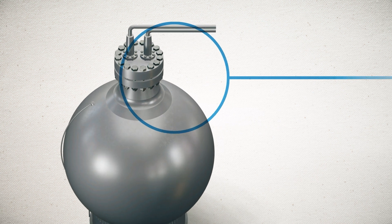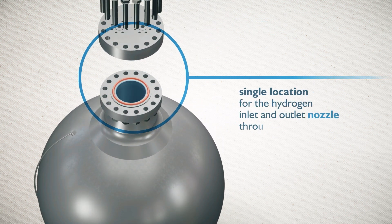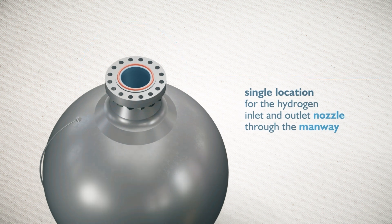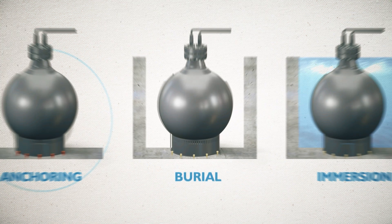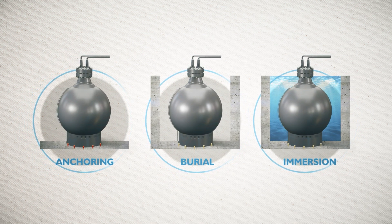Sphero's structure includes a single location for the hydrogen inlet and outlet nozzle through the manway, a lower base that includes anchoring, burial and possible immersion to keep the temperature of the tank constant.